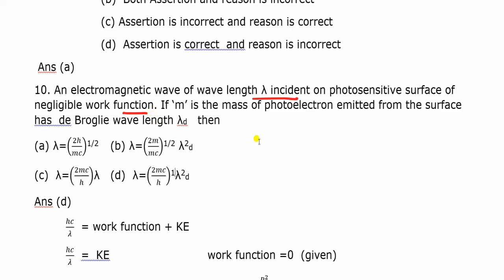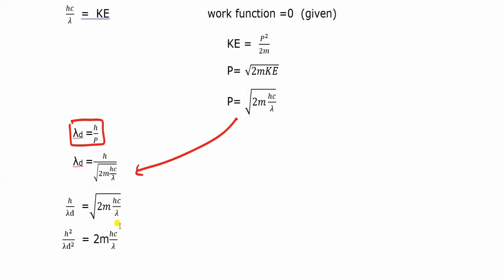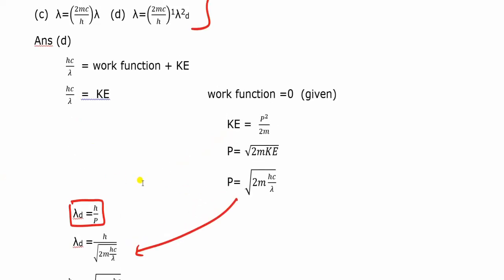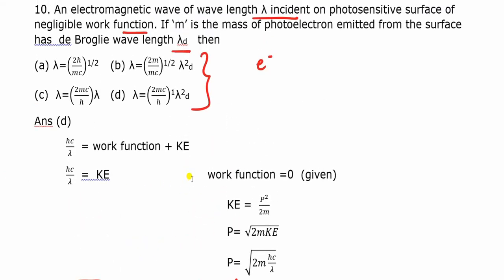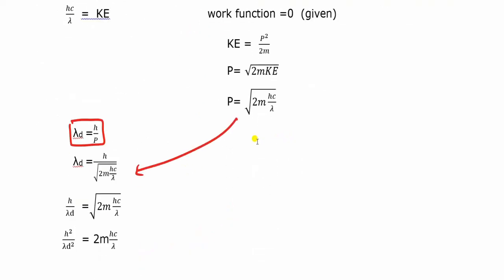The ejected electron has a de Broglie wavelength lambda d. Applying the wave-particle duality concept and momentum calculations gives the final answer. These are the MCQs covering the photoelectric effect and Heisenberg uncertainty principle concepts.